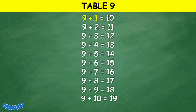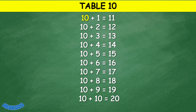Table 9: 9 plus 1 equals 10, 9 plus 2 equals 11, 9 plus 3 equals 12, 9 plus 4 equals 13, 9 plus 5 equals 14, 9 plus 6 equals 15, 9 plus 7 equals 16, 9 plus 8 equals 17, 9 plus 9 equals 18, 9 plus 10 equals 19.